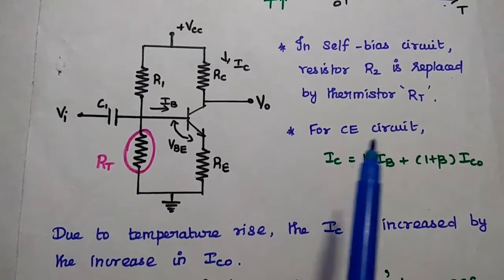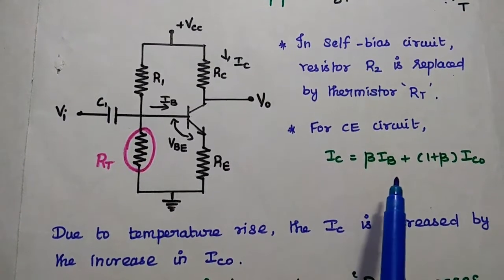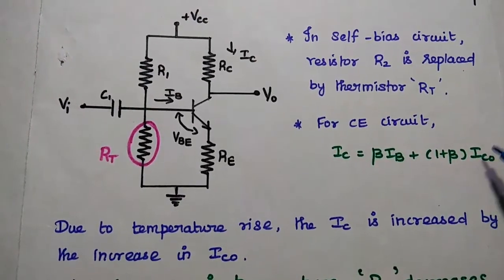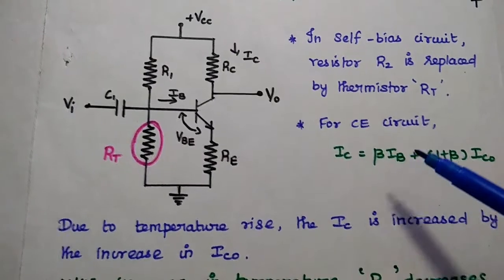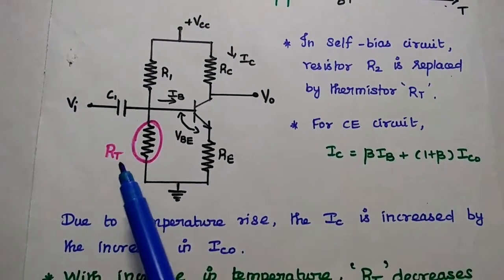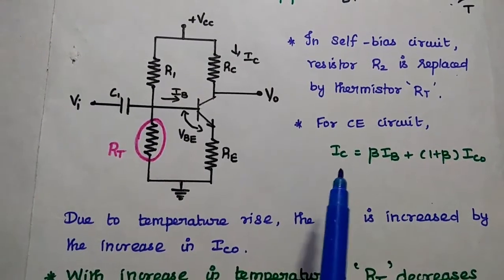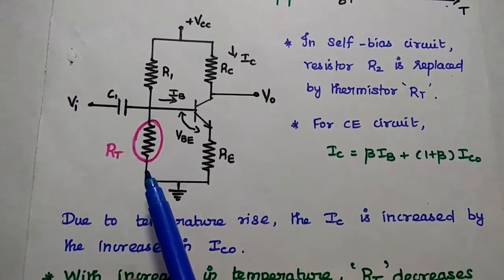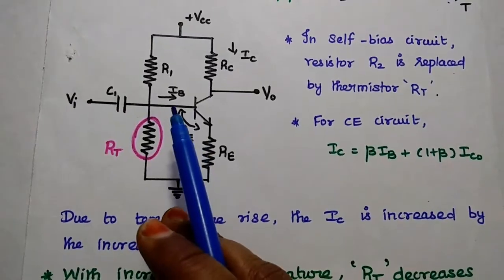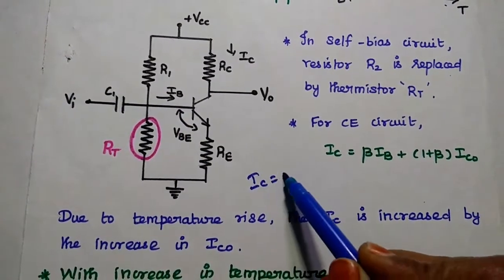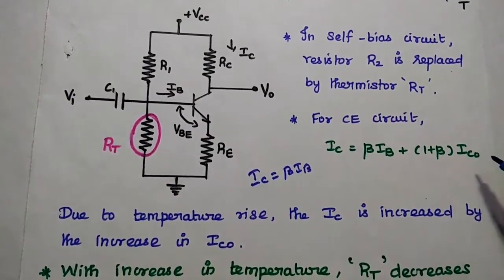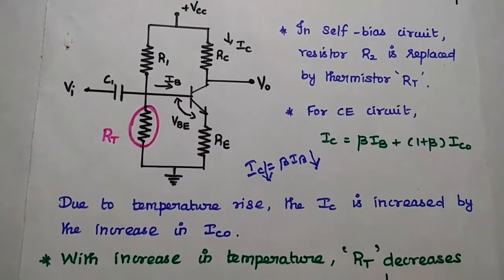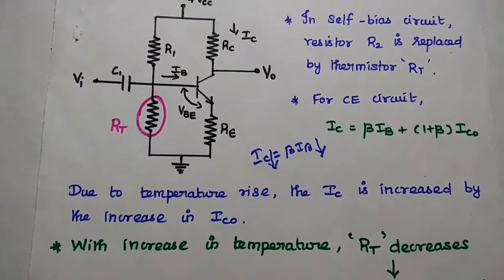As we know, for a common emitter circuit, the output collector current IC equals beta·IB plus (1 + beta)·ICO. If temperature increases, this leakage current increases, in turn increasing the collector current, which will affect the Q point. The thermistor resistance is used to compensate the variation in collector current. If temperature increases, the resistance value decreases exponentially, which decreases the base-emitter voltage, in turn decreasing the base current. If base current decreases, the collector current also decreases, maintaining the collector current constant.